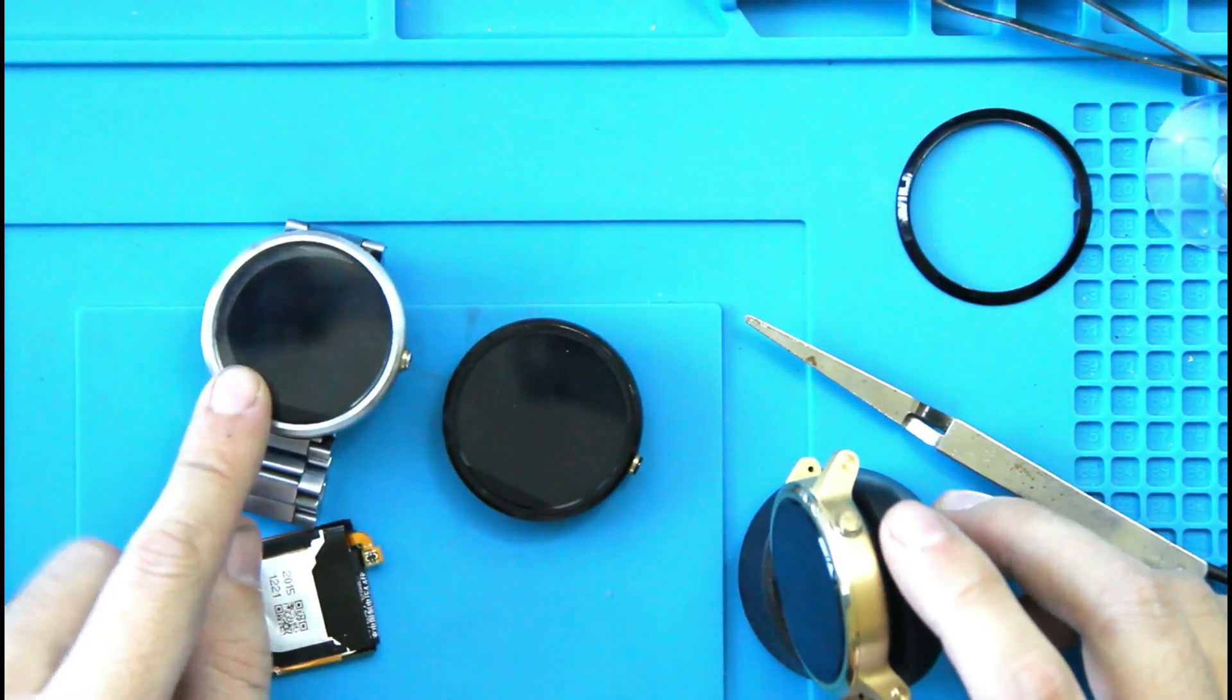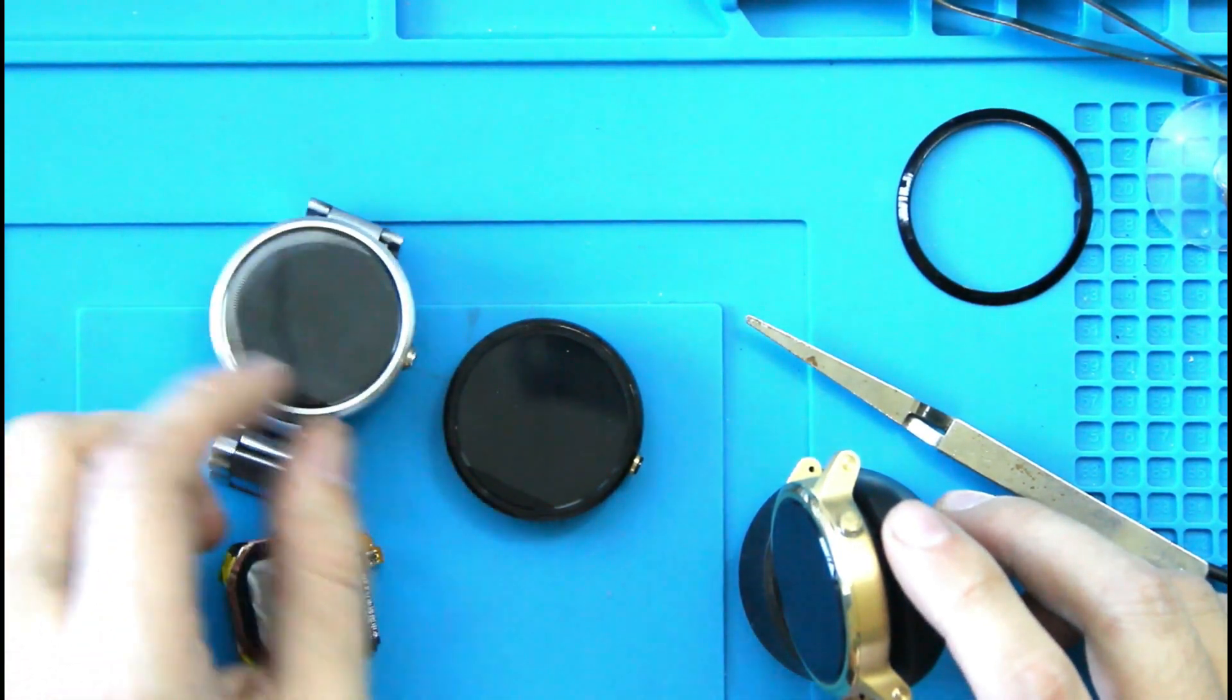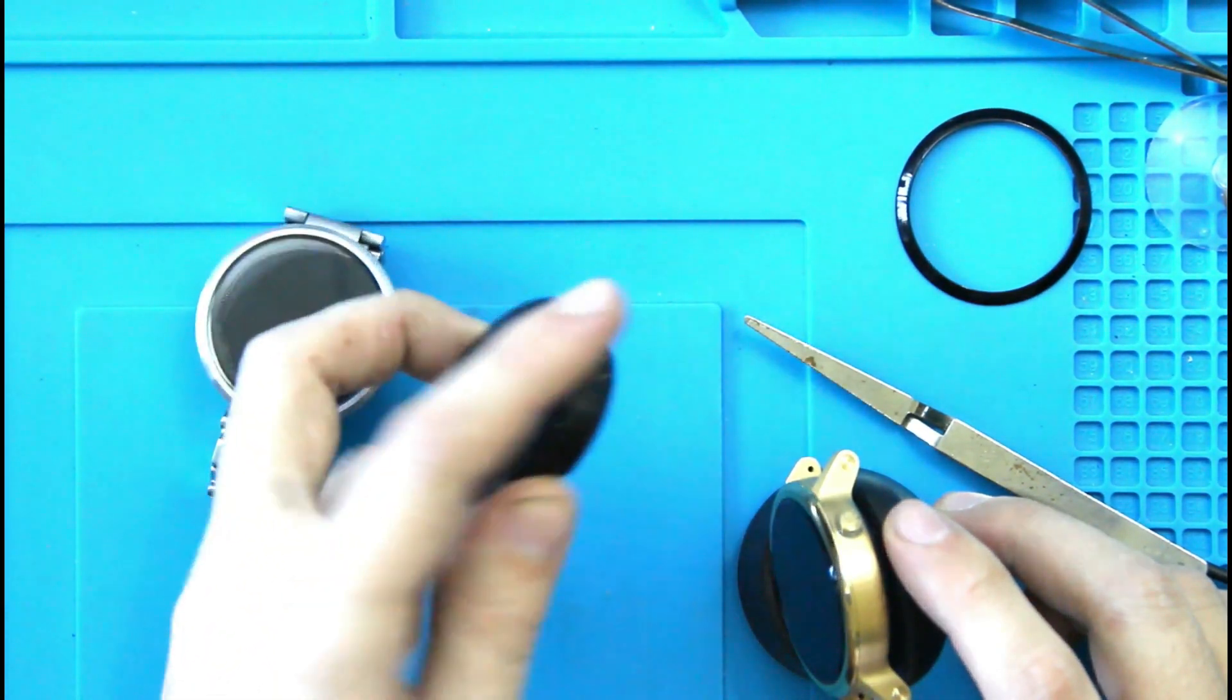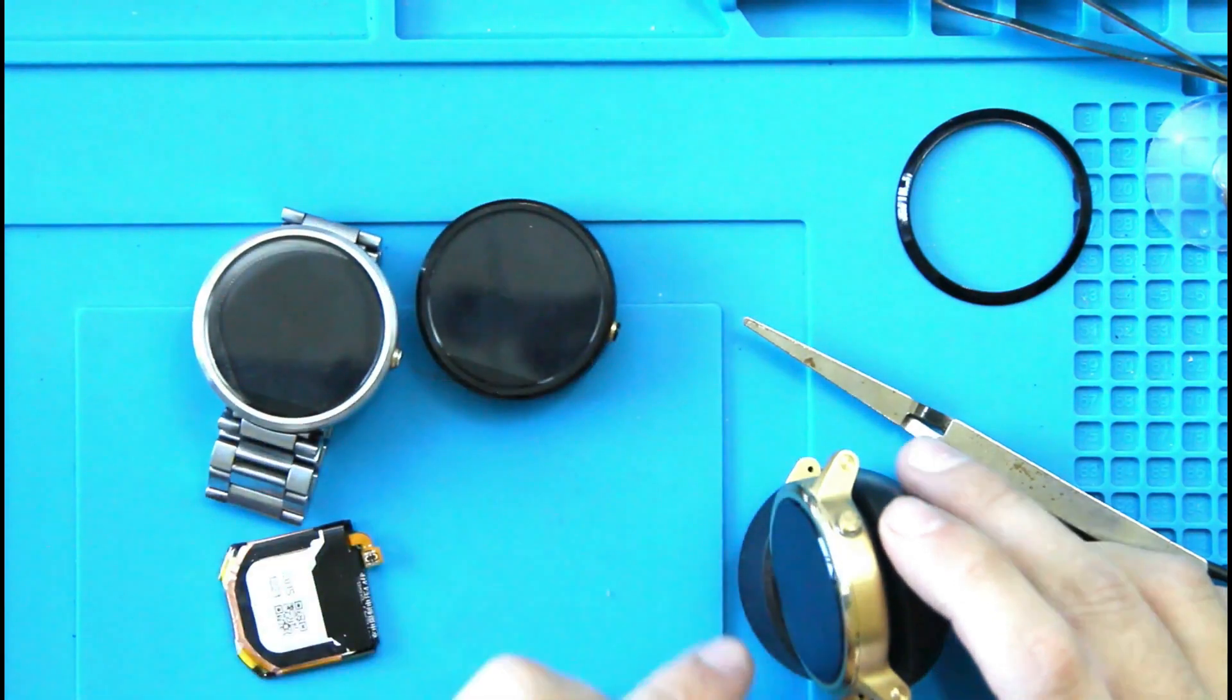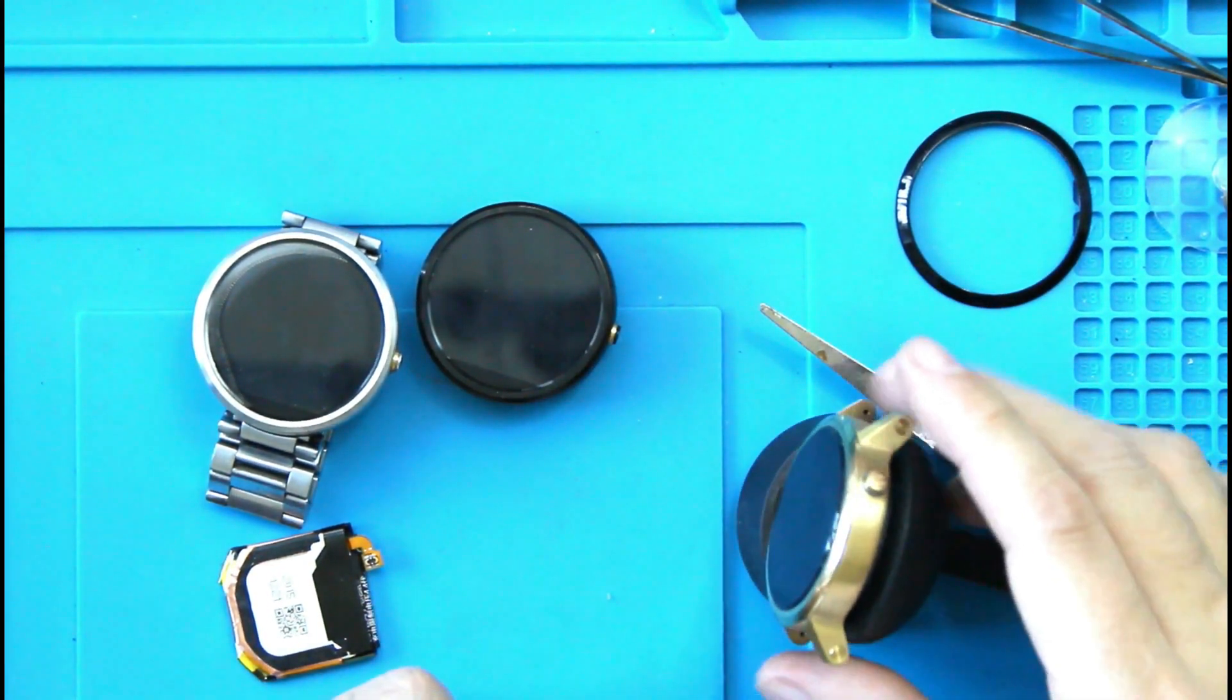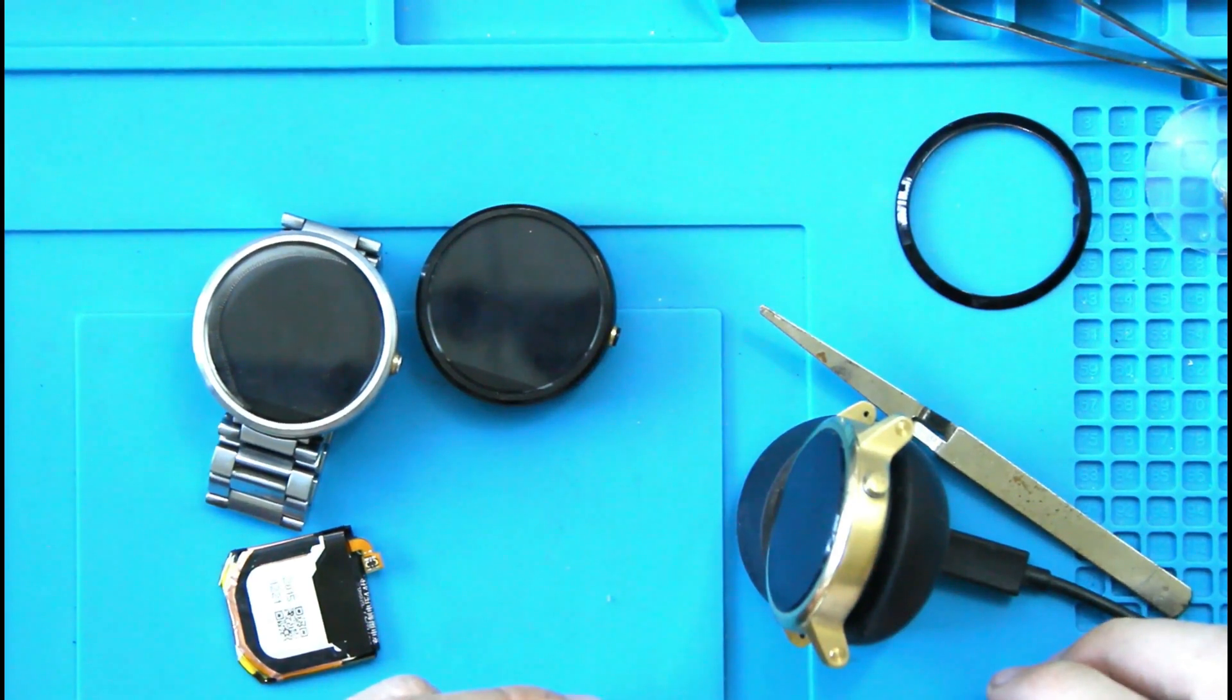So, Moto 360. First gen. Screen problems. Also battery. First gen also. Replace the battery on this twice. And this little button doesn't work on this one anymore. And second gen, brand new. Seems like the screen is dead. So, take that as you will.